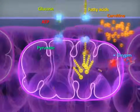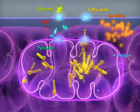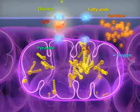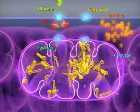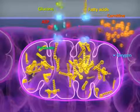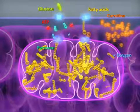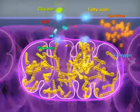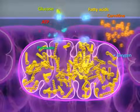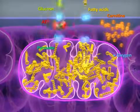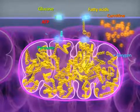Frequently, these disorders are associated with a pathological accumulation of fatty acids in the mitochondria. Fatty acids inhibit mitochondrial function and sufficient ATP synthesis, not only from fatty acids, but also from glucose. And as a result, cells are not supplied with the necessary amount of energy.